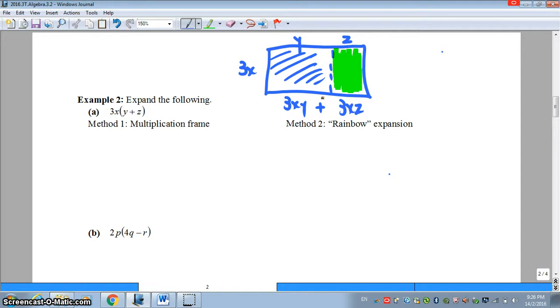Now, there are two methods to doing so. One method is what we call the multiplication frame, which is very similar to what I've just done. Basically, please construct a table where you have 3x multiplied by y plus z. So multiply your 3x with y, you have 3xy, 3x with z, you have 3xz. Last but not least, please sum up your final answer together and your answer will be 3xy plus 3xz.